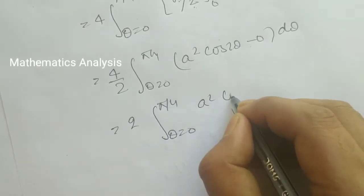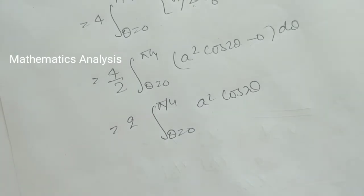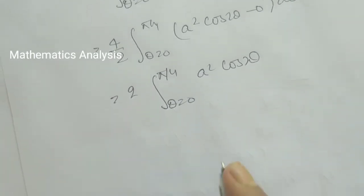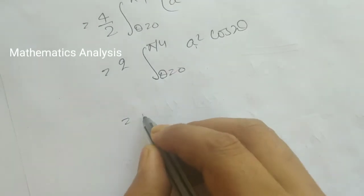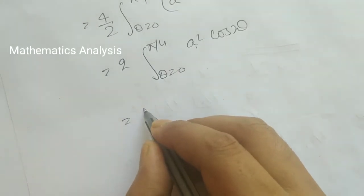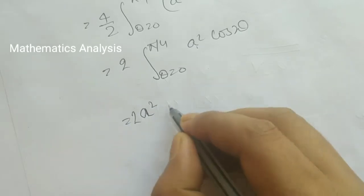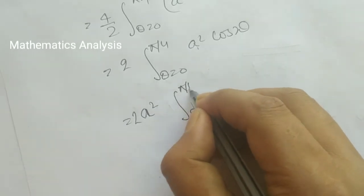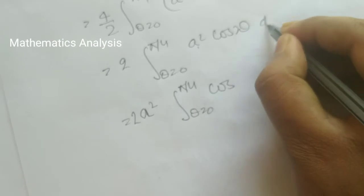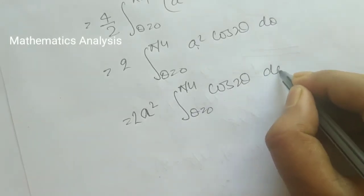From 0 to π/4, the answer is a squared cos 2θ dθ. We integrate a squared cos 2θ with respect to theta.